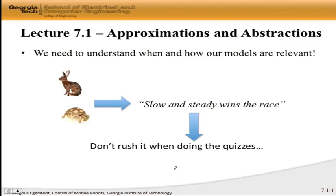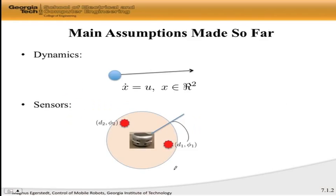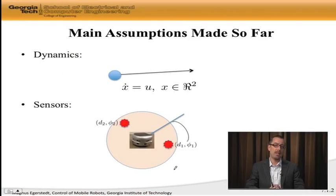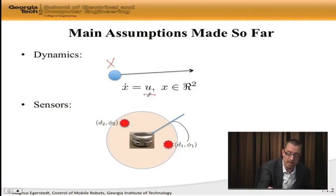So, let's take a step back and see what assumptions did we actually make and what kind of models did we actually use when we were talking about the robots. We really had two main classes of assumptions. One was the dynamics. When we developed our control algorithms, we made the assumption that we had this particle located at x, where we immediately controlled the velocity. x dot is equal to u. Well, that may or may not be reasonable.